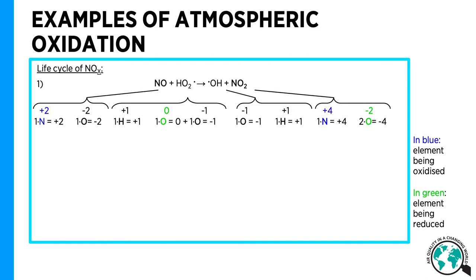In this reaction, nitrogen is oxidized by a hydroperoxyl radical and goes from an oxidation state of plus 2 to plus 4, while one of the oxygens in HO2 is being reduced and goes from oxidation state 0 to minus 2.